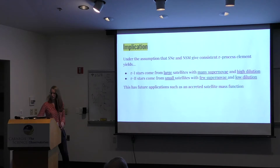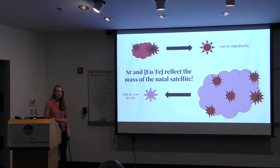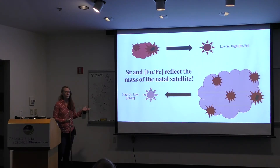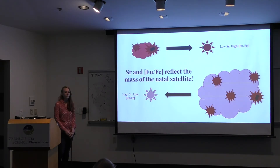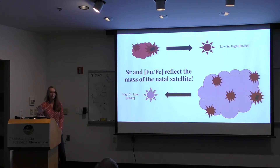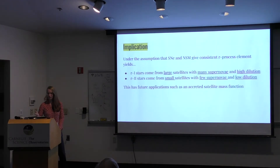In the small satellite scenario, we're assuming a neutron star merger occurred. If you had a small satellite with only regular supernovae and no neutron star merger, you would have an extremely low, probably unmeasurable europium with some varying level of strontium. Right now we are assuming that neutron star mergers are a consistent feature of these halos — it is contingent upon neutron star mergers occurring, and also under the assumption of consistent yields for both supernovae and neutron star mergers.